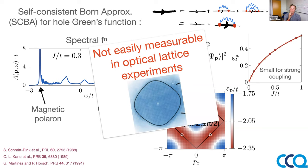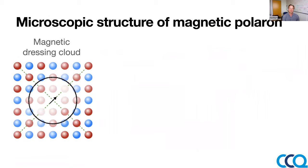These features — energy, residue, dispersion — are what one would calculate if working on other polaron theory, but they're not easily measured in optical lattice experiments where they take pictures of holes hopping. So we need to work harder: we need to look at the magnetic structure of the polaron's dressing cloud — the spin waves it creates — and that is most easily done with the polaron wave function.